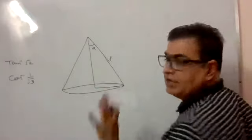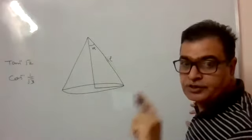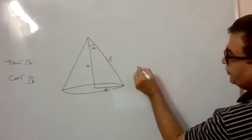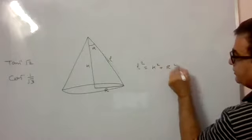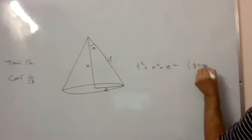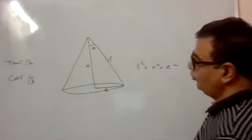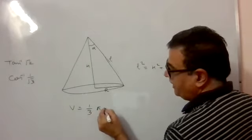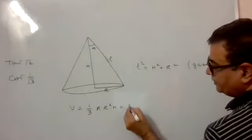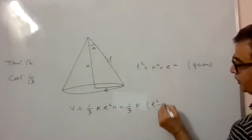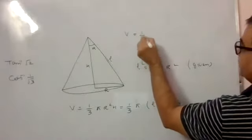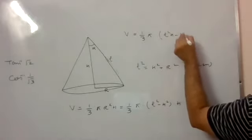L is known, alpha is to be calculated, and we want the volume of this cone to be maximum. Let the radius of this cone be R and the height be H. Pythagoras theorem says L squared is H squared plus R squared. Volume of the cone is 1 by 3 pi R squared into H. Since R squared equals L squared minus H squared, volume is 1 by 3 pi into (L squared H minus H cubed).